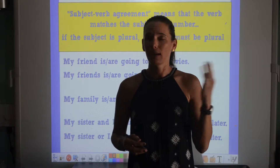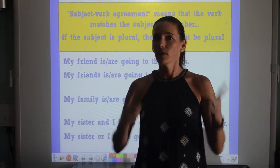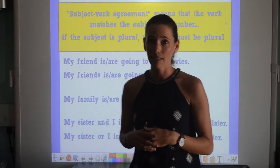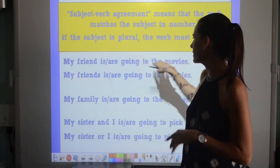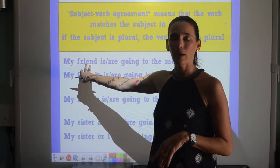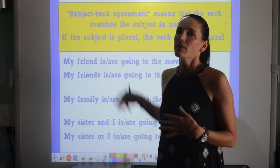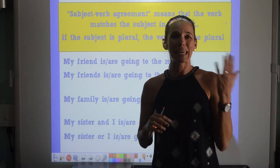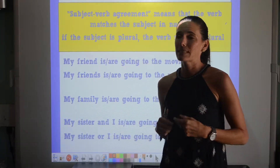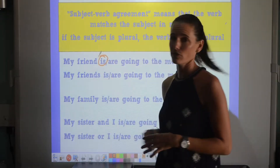Subject-verb agreement is when your noun and your verb have to match in number. Essentially, if you have a singular noun, you need a singular verb. If you have a plural noun, you need a plural verb. For example: 'My friend is or are going to the movies.' I know that 'my friend' is singular. The trick I like to use is to substitute 'he' for singular nouns. I would say 'he is going to the movies,' so I know that 'is' is my singular verb.